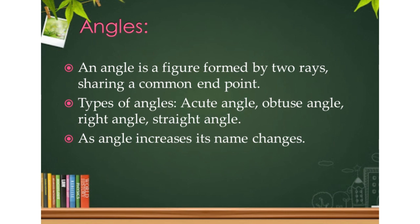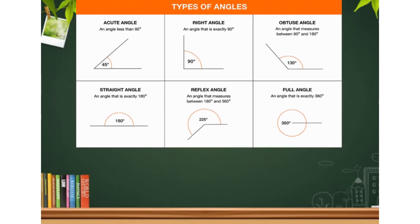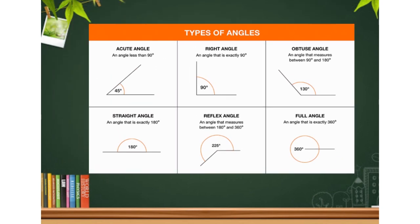Just as 4 sides of a polygon is called a square and 5 sides is called a pentagon, here also as the angle increases or decreases, its name changes. You can see the types of angles, and the very basic angle in the center is called a right angle.